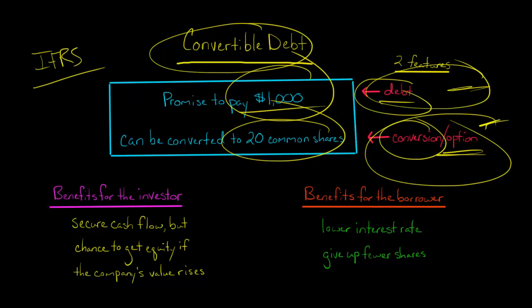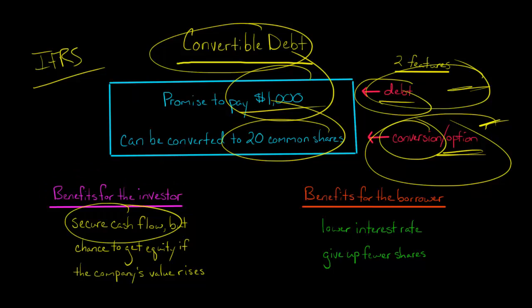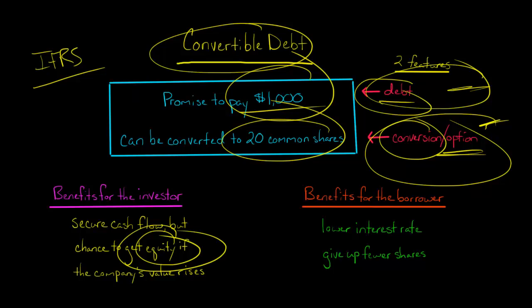So what are the benefits for the investor of doing this? Why would an investor want to buy convertible debt? The nice thing is you get a secure cash flow — you're going to be getting interest. But if the company takes off and something great happens and the company is becoming really valuable, you might want to own equity because these shares are going to be worth a lot of money. You'd want to be a common shareholder instead.